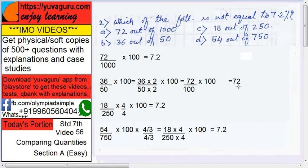Cancel. This is 72, but we want 7.2, so this is the right answer. B is not equal to 7.2. You can try the other ones also, you will get 7.2 only.